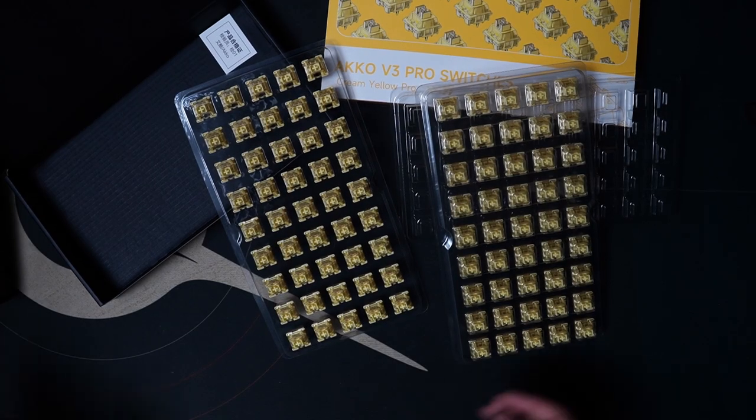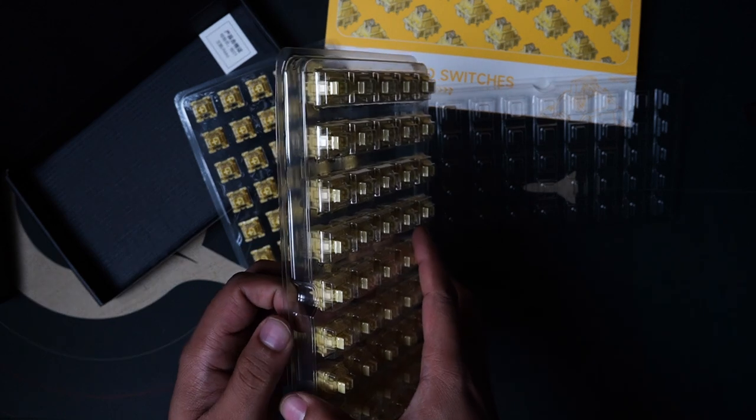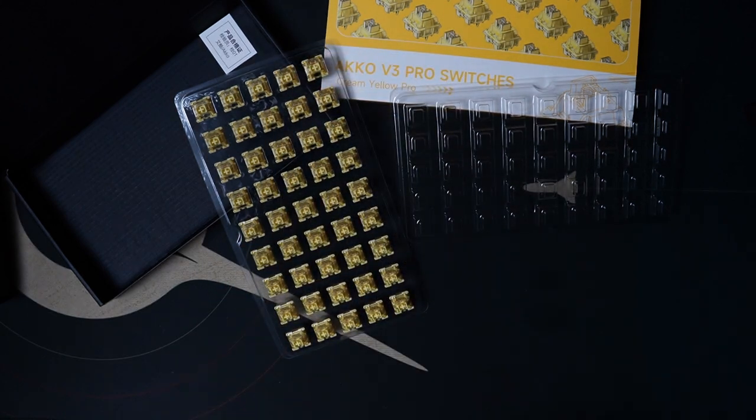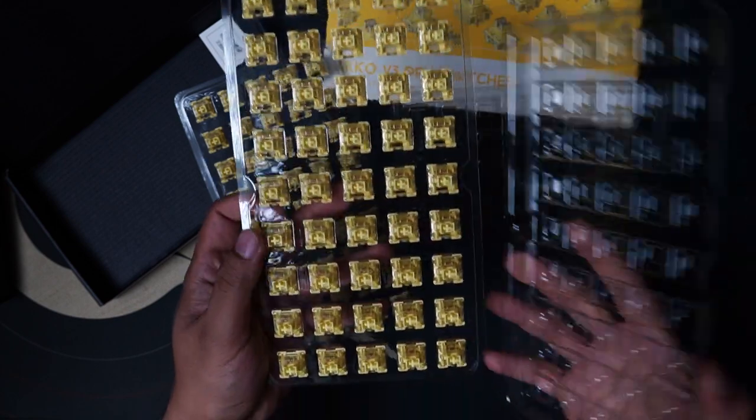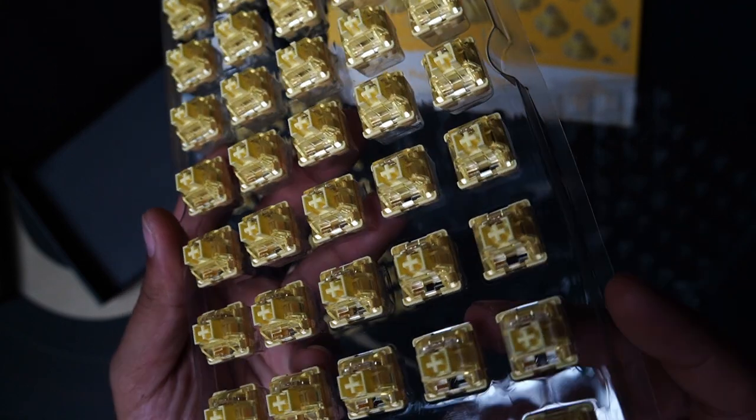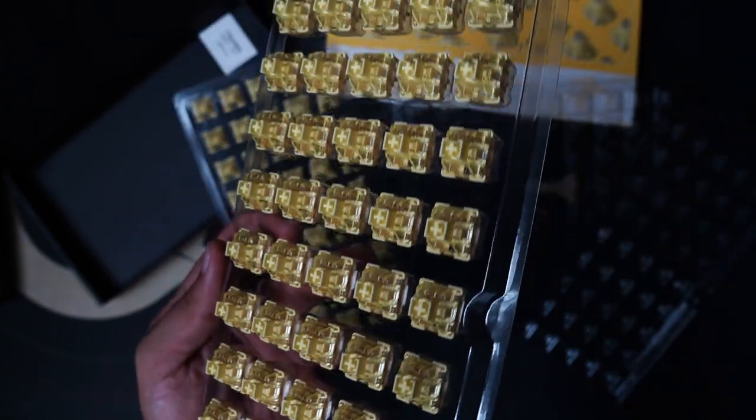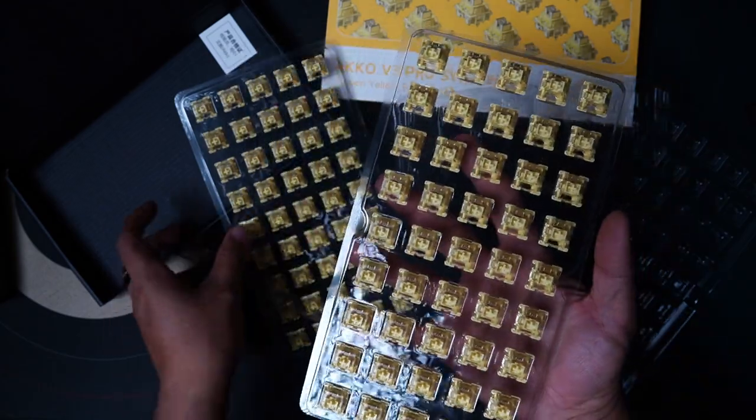So these are Akko Cream Yellow V3 Pros. The predecessor to the V3s, which were so hyped while they were available, and were constantly running out of stock. People were even buying them to lube them, and sell them as lubed Switches. Can't blame them though. Those Switches were so good, even just on my Reviyong 41.